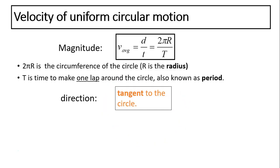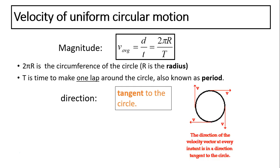Velocity has two parts: magnitude and direction, because velocity is a vector quantity. In uniform circular motion, velocity equals 2πr over T. That is because 2πr is the circumference — the distance the object travels in one circle. T has a special name: it's called the period, which is the time for one lap. The direction of velocity in circular motion is always tangent to the circle.